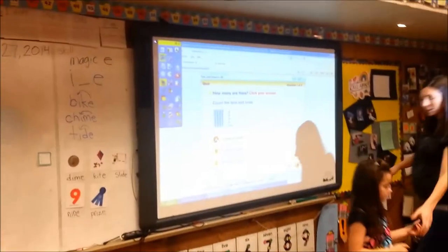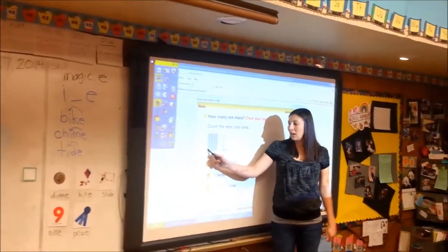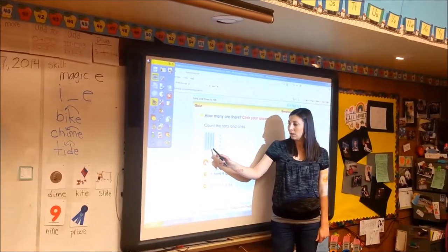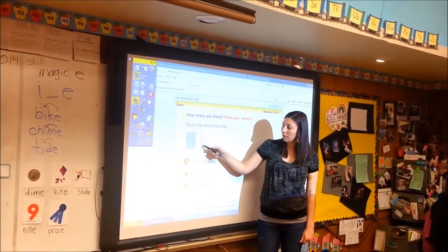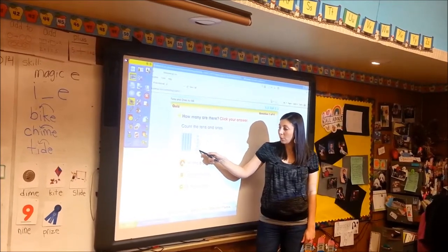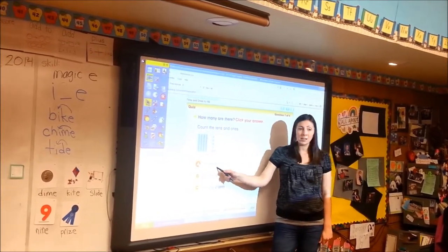What's up? Nice job. Let's count it all together. Ready? Ten, forty-one, forty-two, forty-three, forty-six. And we have four tens and six ones.